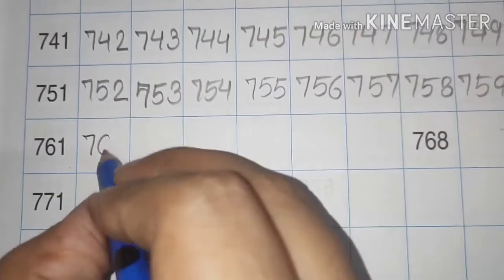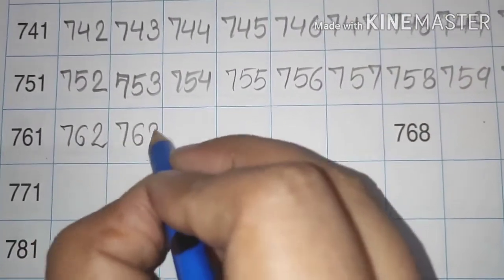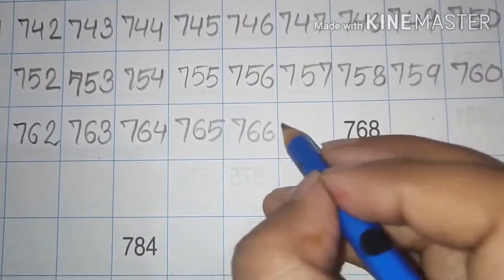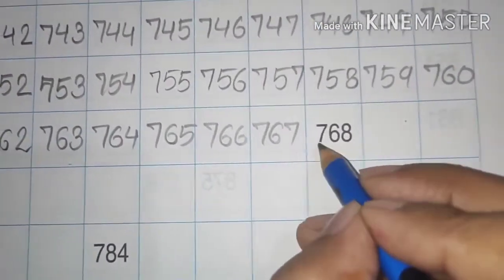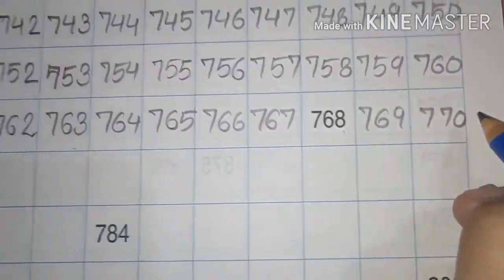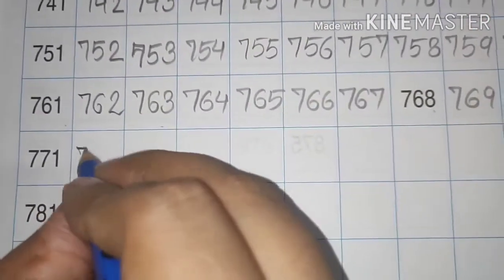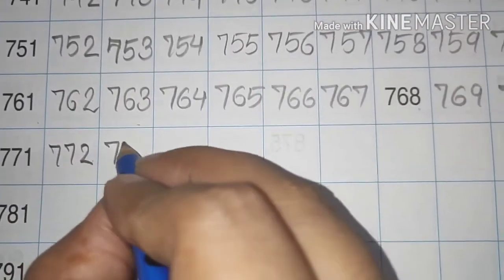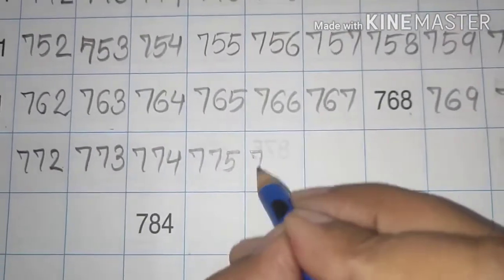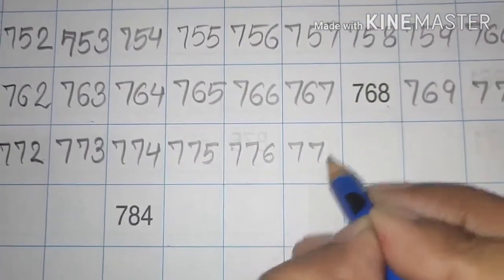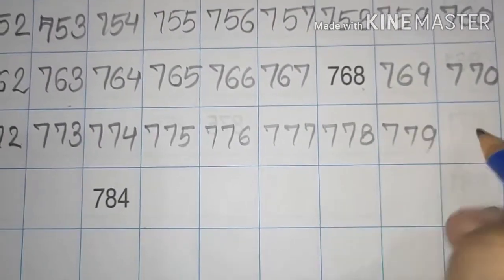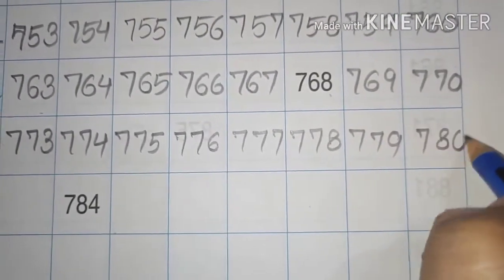761, 762, 763, 764, 765, 766, 767, 768, 769, 770. 771, 772, 773, 774, 775, 776, 777, 778, 779, 780.